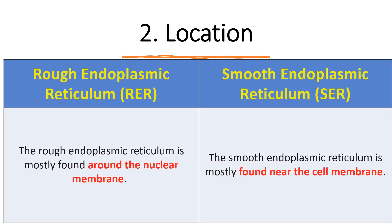The second major difference is their location. The rough endoplasmic reticulum is mostly found around the nuclear membrane, mainly towards the nuclear membrane periphery. Whereas smooth endoplasmic reticulum is found near the cellular membranes, meaning away from the nuclear membrane. So near the nucleus we have rough ER where protein synthesis occurs, and towards the plasma membrane we have smooth endoplasmic reticulum.